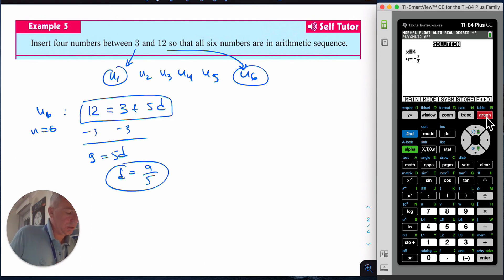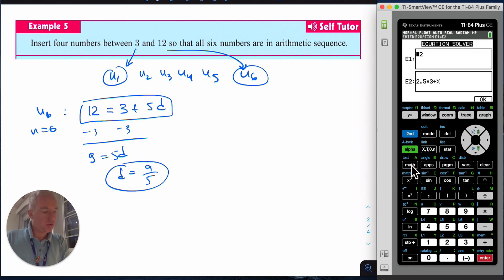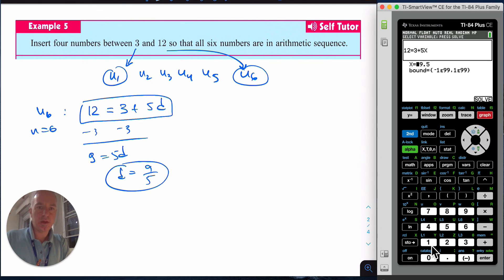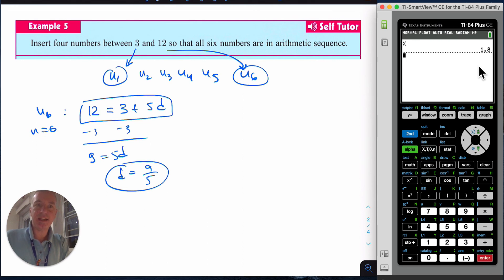Let me show you a couple of tips. Using the numeric solver: I'm going to write on the left side 12, and on the right side 3 + 5x. I'm going to solve it and I get 1.8. If I press alpha y4, I can make it as a fraction which is 9/5.